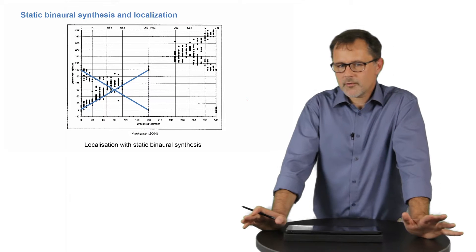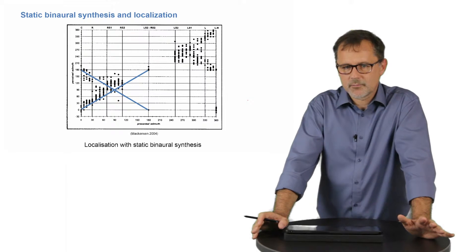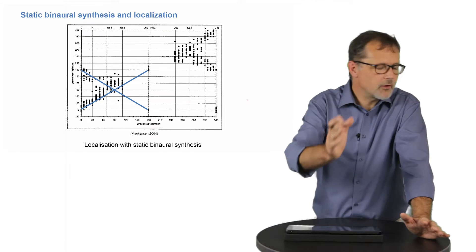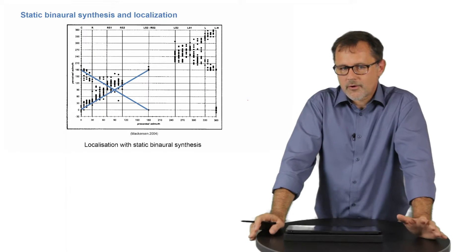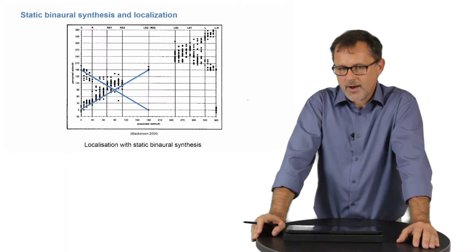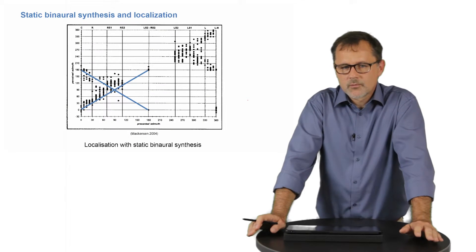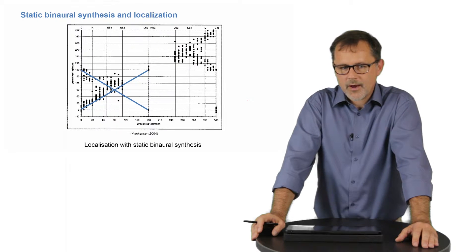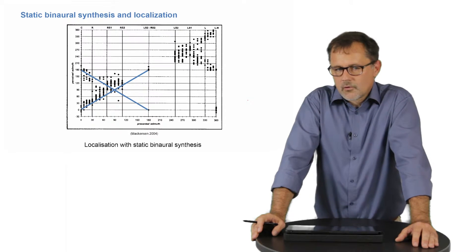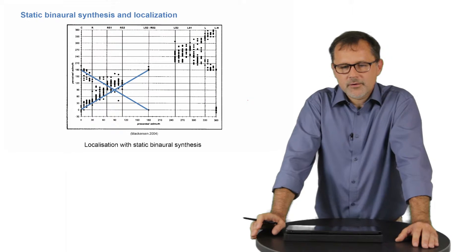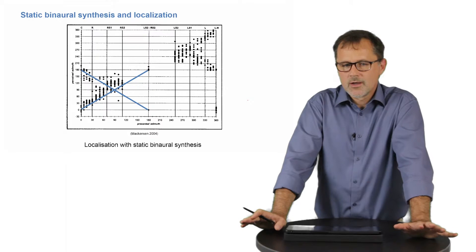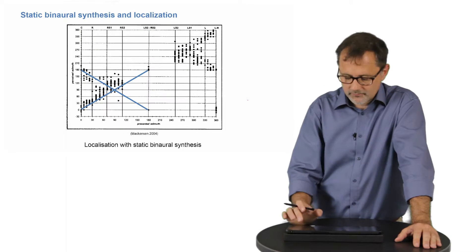This ambiguity does not appear in natural listening, because when I turn my head to the left, the signal of a sound source in front will arrive earlier and louder at the right ear, whereas it will be earlier and louder at the left ear for a source at the back. So if I manage to adapt the ear signals to these movements also in binaural synthesis, this confusion will be immediately resolved as well.